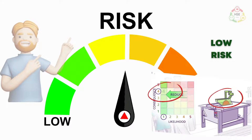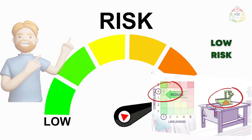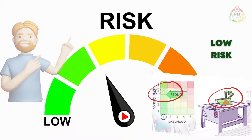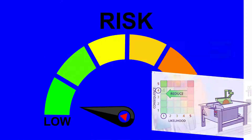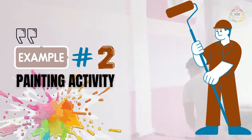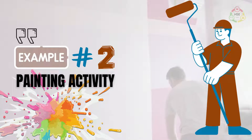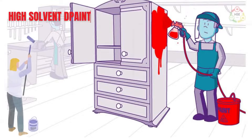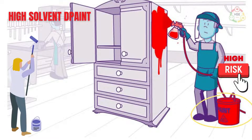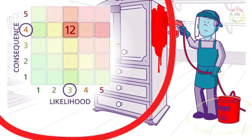But if the cutter is guarded and covered, then the risk level will be reduced, as in this case the likelihood of harm will be reduced. The second example is the painting activity. In this example, high-solvent paint is being used, which results in high risk, as in this case both likelihood and consequences are high.